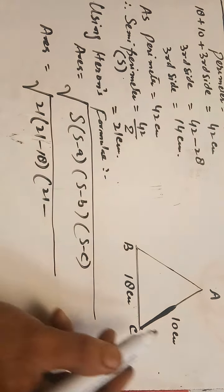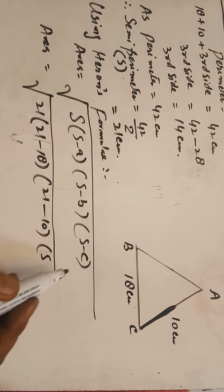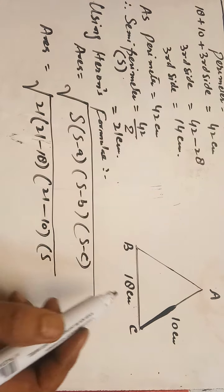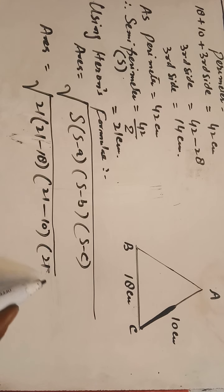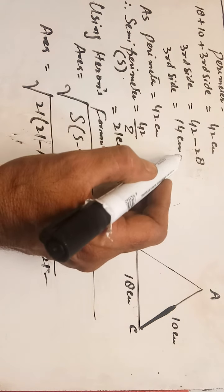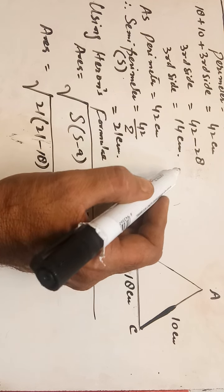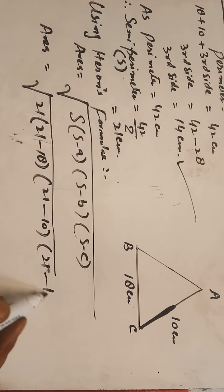Substituting the values: s is 21, s minus a is 21 minus 18, s minus b is 21 minus 10, and s minus c is 21 minus 14, which gives 3, 11, and 7 respectively.